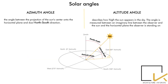The horizontal plane consists of the north-south axis and the east-west axis. The north direction starts at zero degrees, east stands at 90 degrees, south at 180 degrees, and west at 270 degrees, completing a full circle. To determine the Sun's position in the sky dome, we must understand solar angles. The azimuth angle is the angle between the projection of the Sun's center onto the horizontal plane and the due north-south direction.